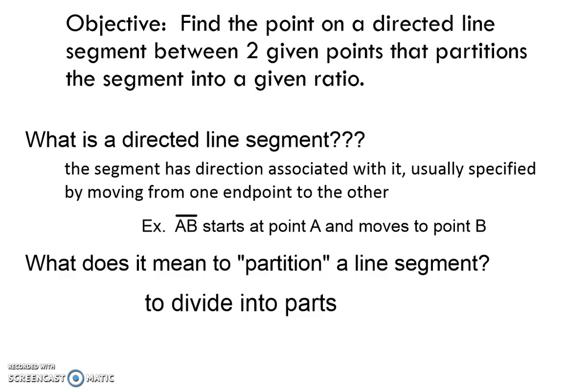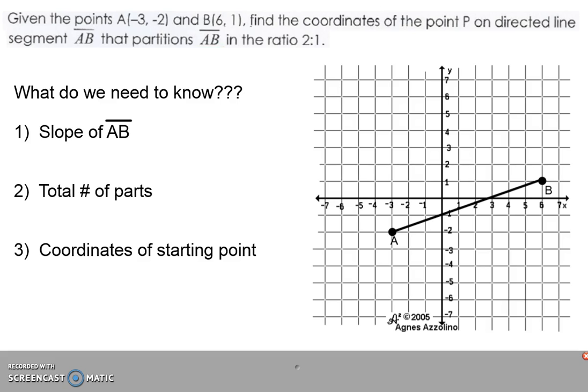We're going to use a coordinate plane and also do this algebraically without having to look at a graph. So if I have the point negative three, negative two for A and six, one for B, I want to find the coordinates of point P on this line segment that would partition — divide — this segment into two parts with a ratio of two to one.